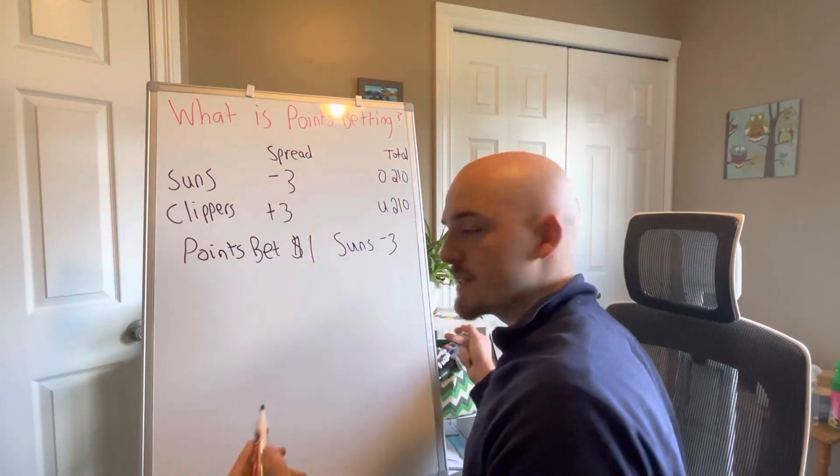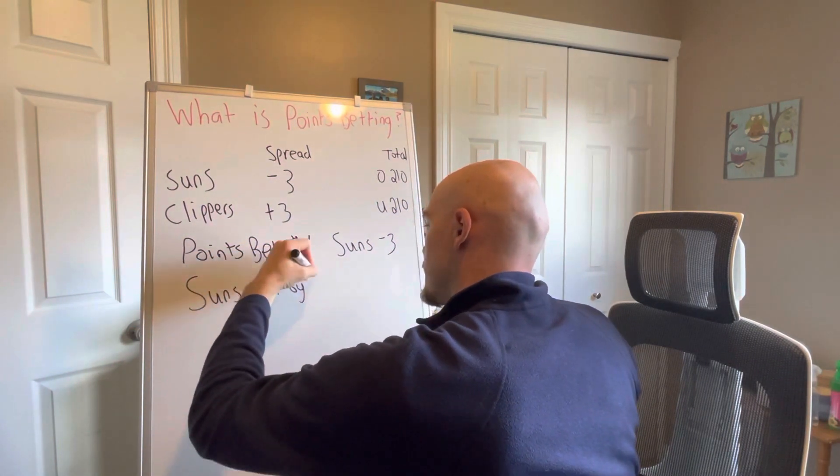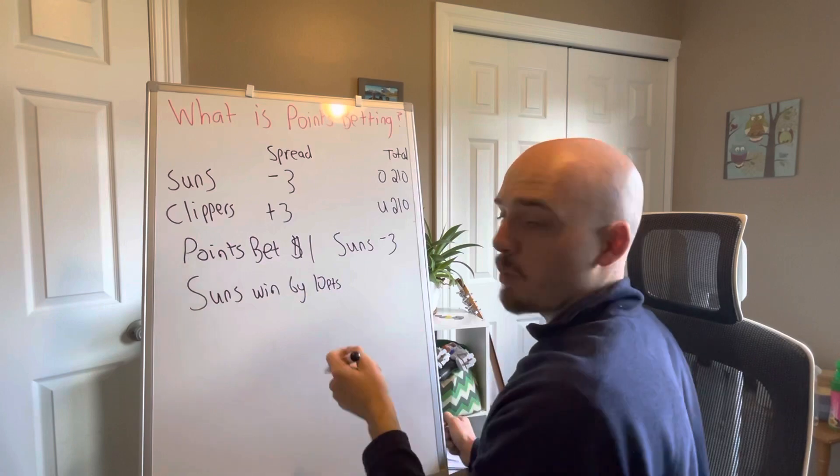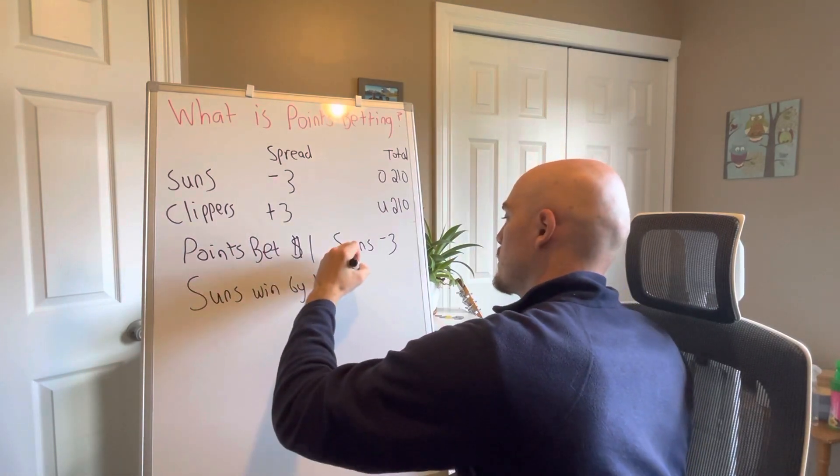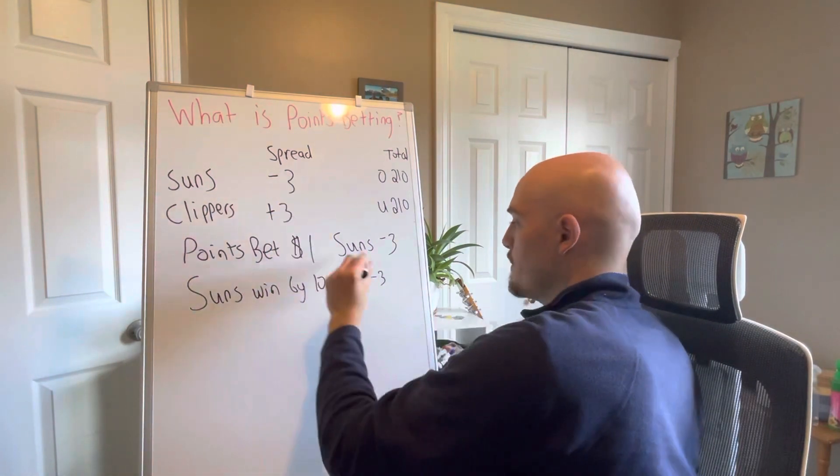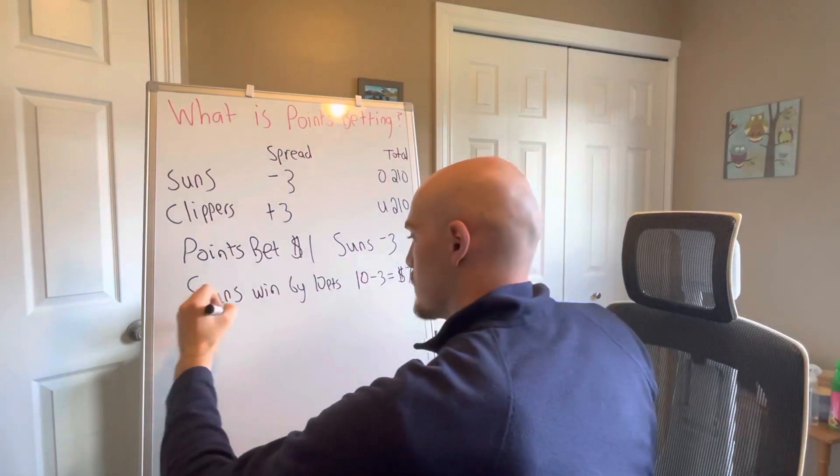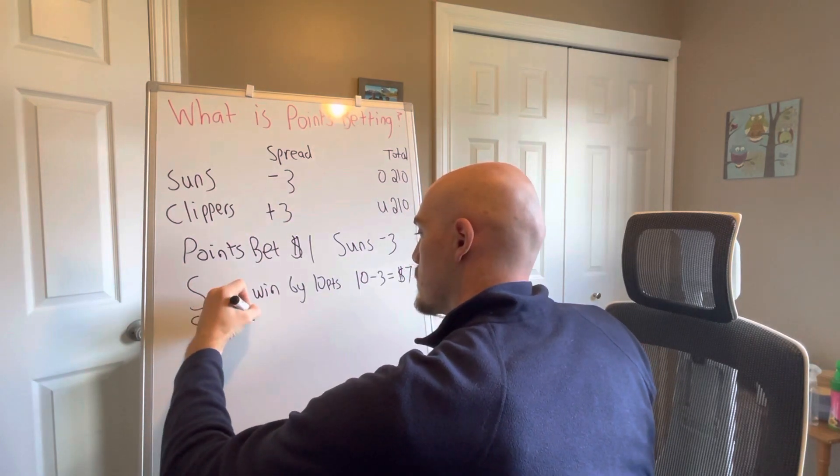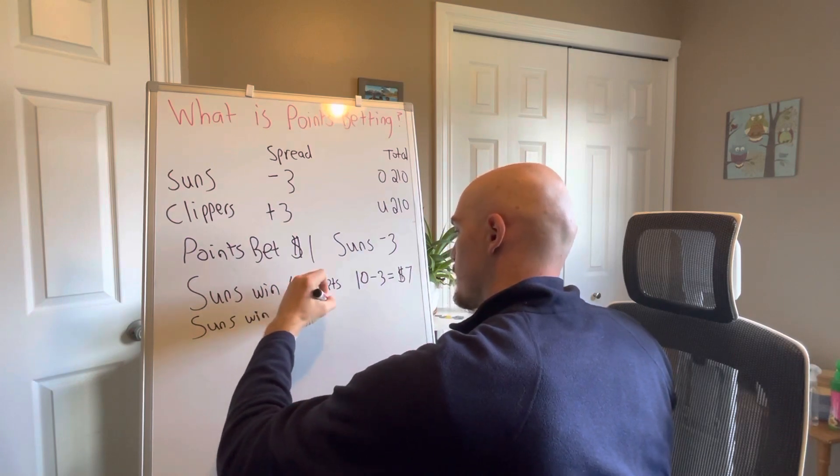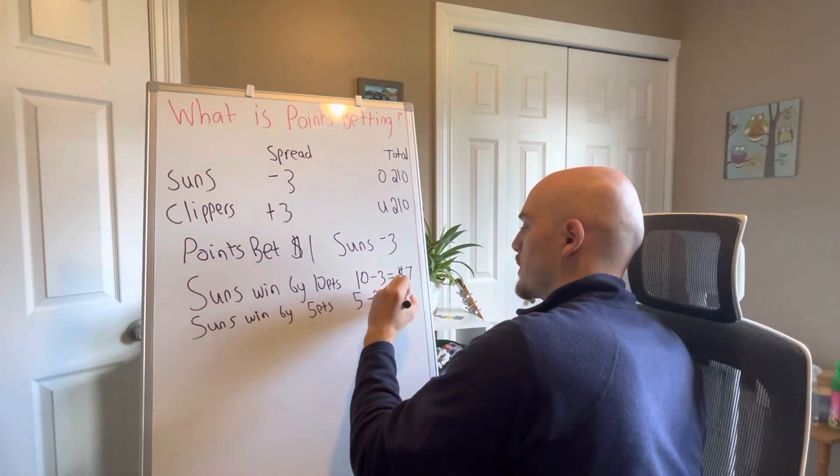The way this kind of plays out is let's say Suns win by 10 points. So if the Suns win by 10 points, then you have a 10 point winning margin minus the three from the spread. So you're going to win $7. Let's say Suns win by five points. That's a winning margin minus the three they were given. You're only going to profit two bucks.